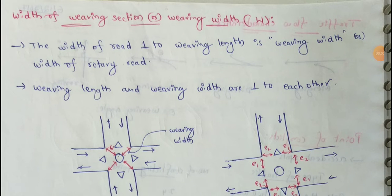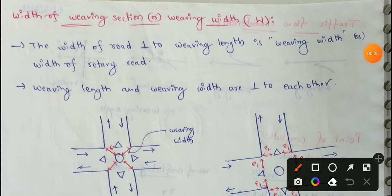Next topic: Width of Weaving Section or Weaving Width. This is W to indicate. So, first point: